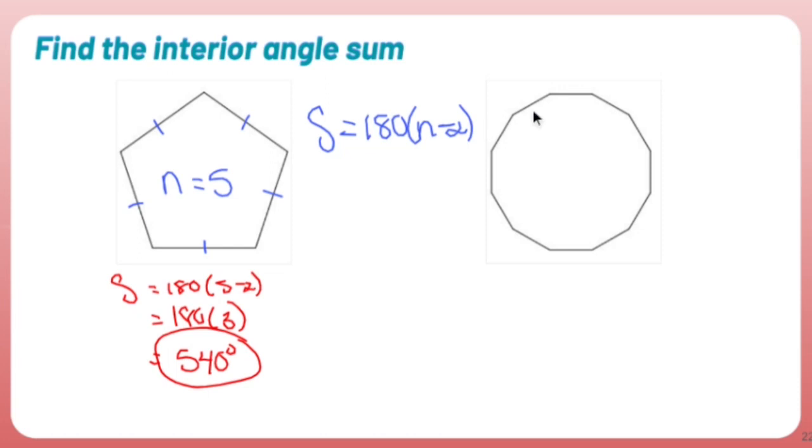How many sides do I have here? 1, 2, 3, 4, 5, 6, 7, 8, 9, 10, 11, 12.